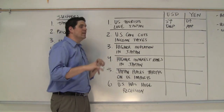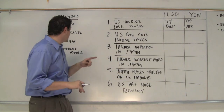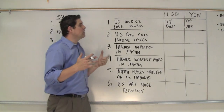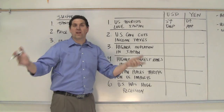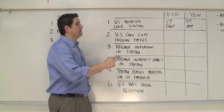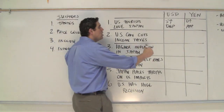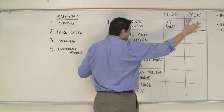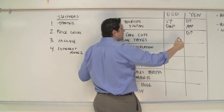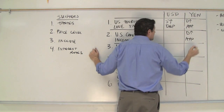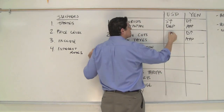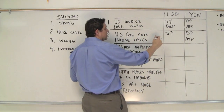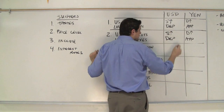If the U.S. government cuts income taxes, that would increase United States income. If the United States is richer, they'll buy more things from other countries including Japan. So that would cause the demand for yen to increase — if we're richer, we'll buy more of their stuff. So the yen will appreciate. We'll supply more of our dollars, and so the dollar will depreciate.